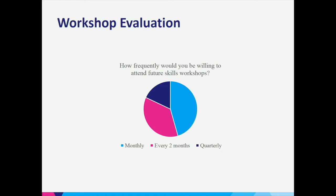We also assessed how frequently people would be willing to come to workshops. This surprised me — I thought more people would say quarterly, but actually most said they would want to come either monthly or every two months to practice procedural skills. This was a small, voluntary, and possibly self-selected group, but anecdotally there were more people interested in coming who were unable to due to timing and scheduling conflicts, including some who signed up but got stuck in clinic.